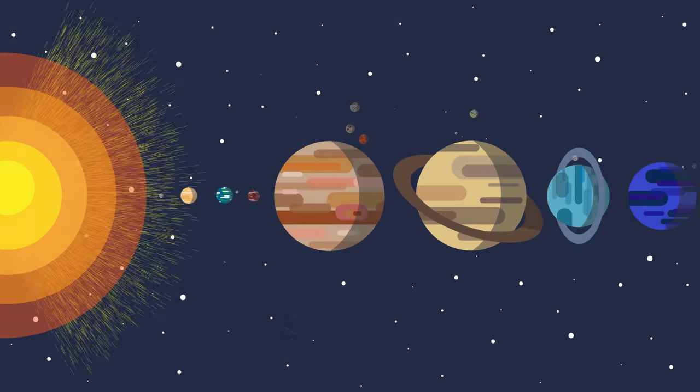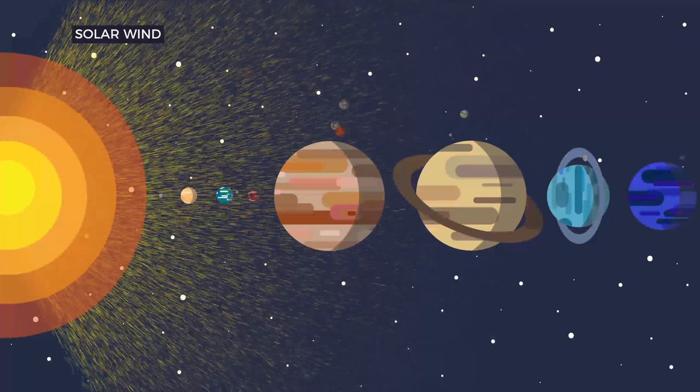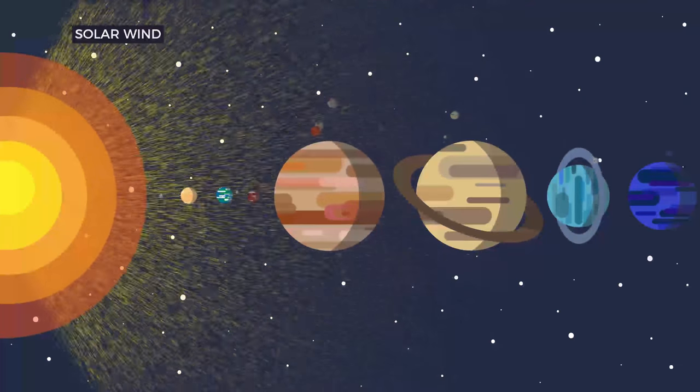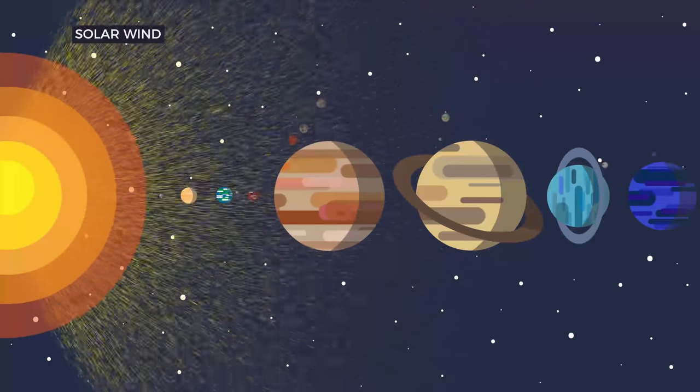The science behind the aurora starts with the sun. Solar wind from the sun is hurled out in all directions through the solar system at millions of miles per hour.